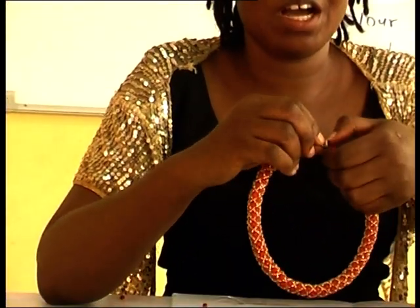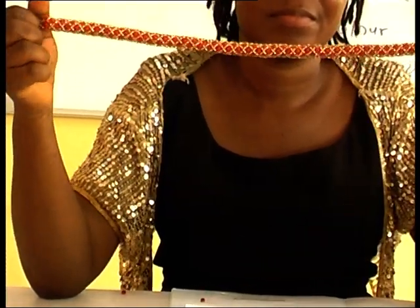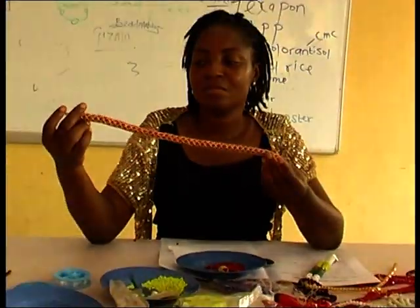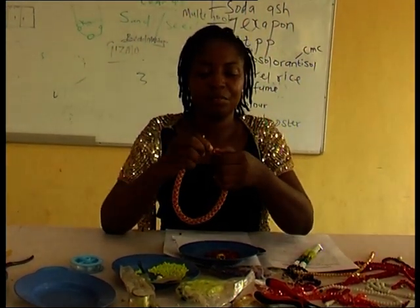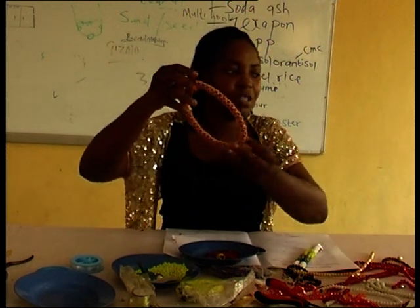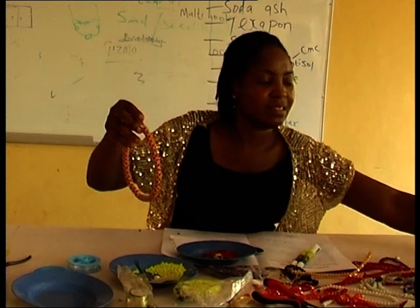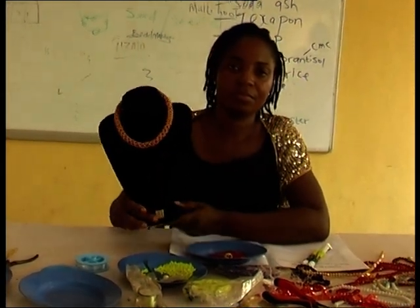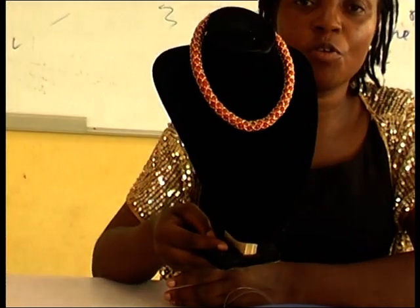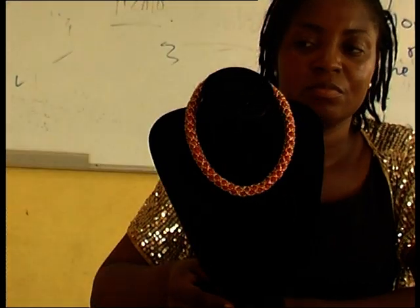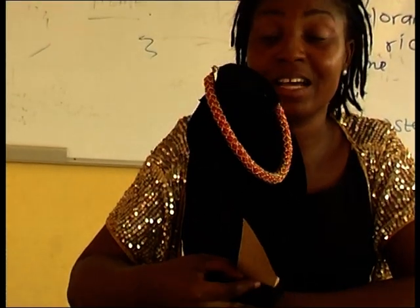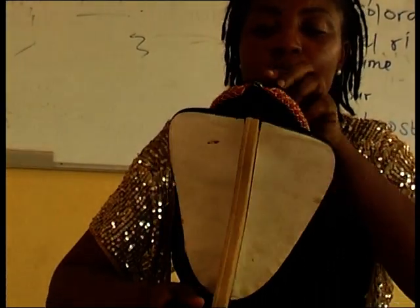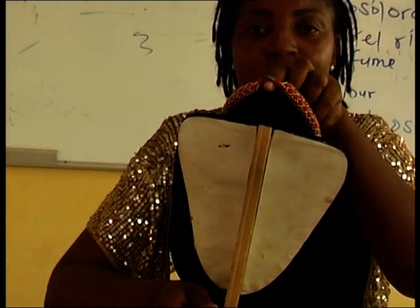This is how you continue and you will have this finished design — this is what we call the Apuja connection. I will place it on my neck stand. When you have gotten to your desired neck size, you insert your hook in order for it to stay on the neck. This is your hook — can you see that?